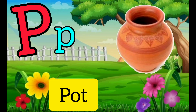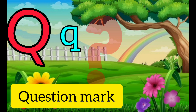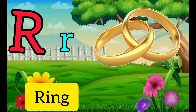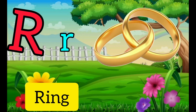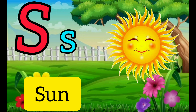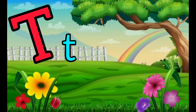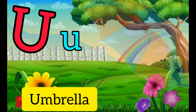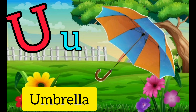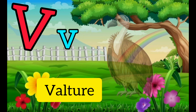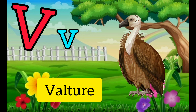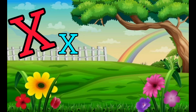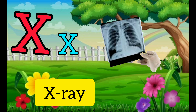P for pot, pot means patto. Q for question mark, question mark means jiggasachino. R for ring, ring means auntie. S for sun, sun means surjo.